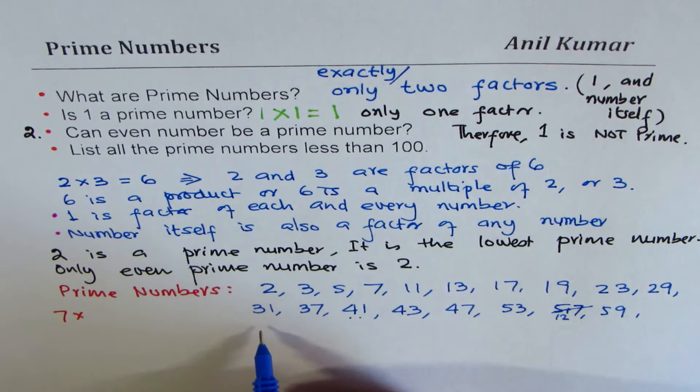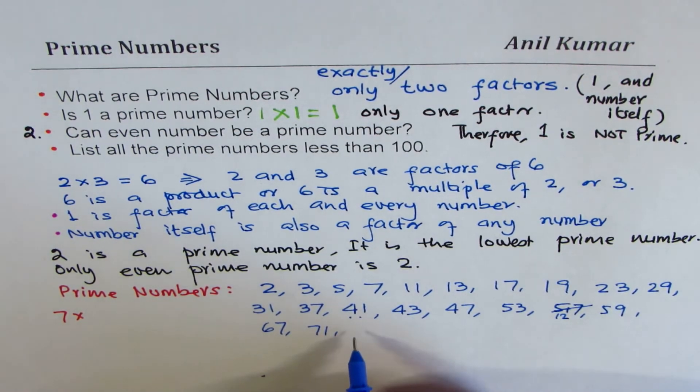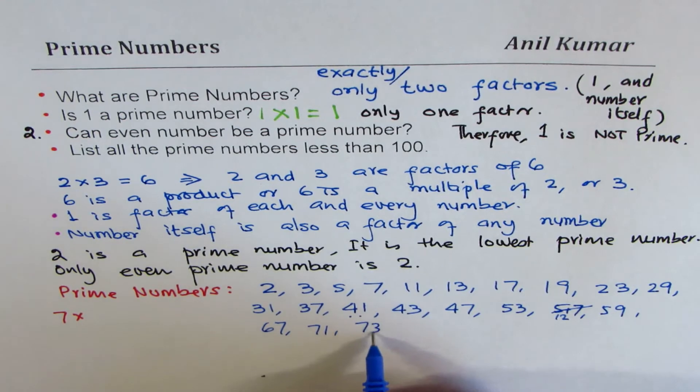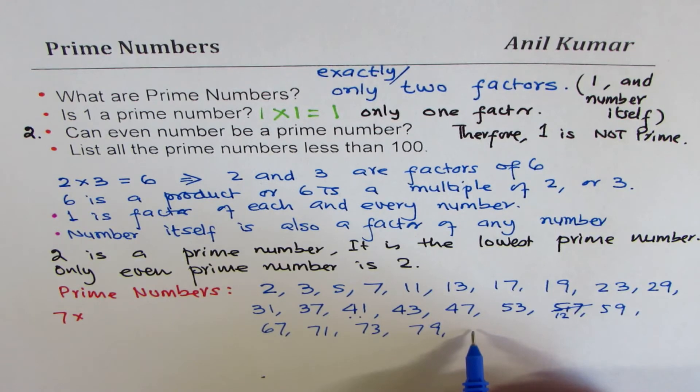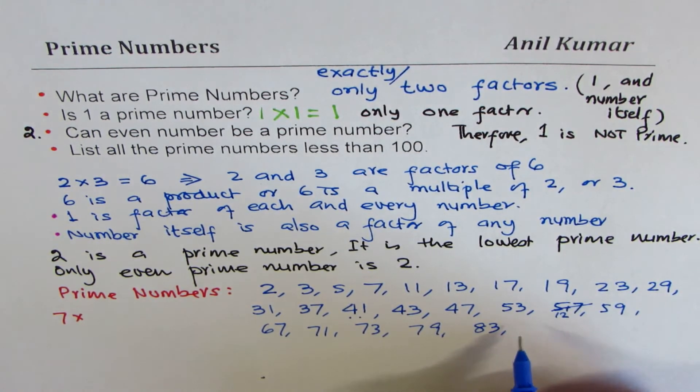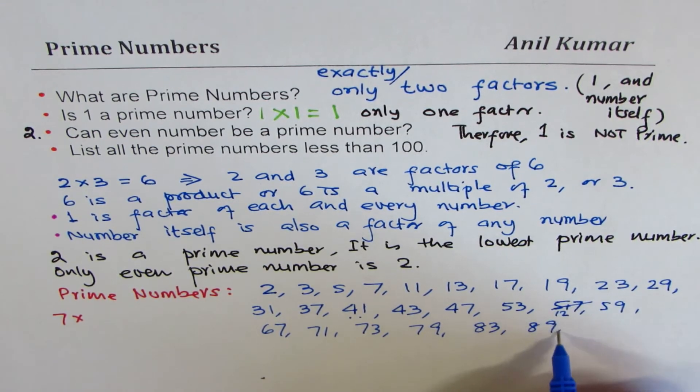67 could be there. 69 is not there. 71 we'll try. 73, let's check. 79 we can try. 81 is nine times nine. 8 plus one is nine, so it's divisible by nine. 83, okay. 87, 8 plus 7 is 15, so it's divisible by three.